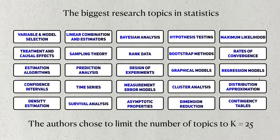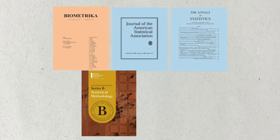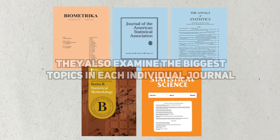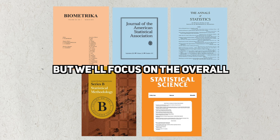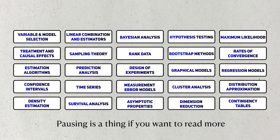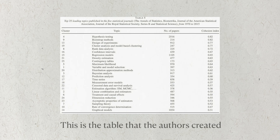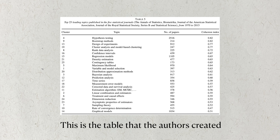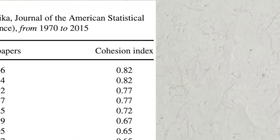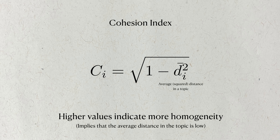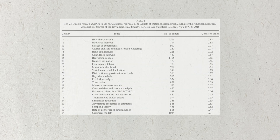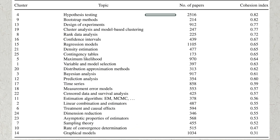In the end, the authors chose to go with 25 clusters to represent the leading topics in statistics. Not only do they get the top 25 topics among all the journals together, they also look at the top topics within the journals themselves — but for this video, we'll only examine the overall results. The authors sort the results by a number called the cohesion index, which gives us a rough measure of how homogeneous the group is overall. A higher cohesion index means that the average distance to the topic centroid is lower. By far, the largest and most cohesive group are the hypothesis testing papers.